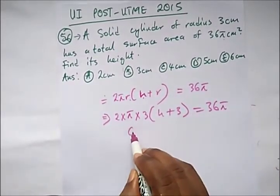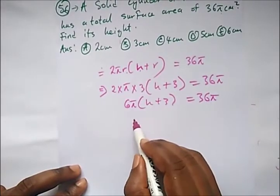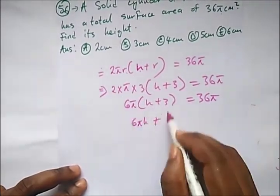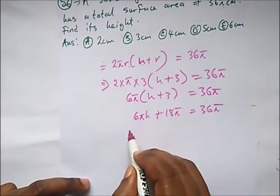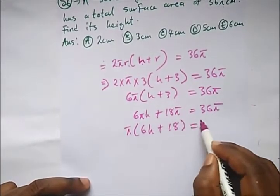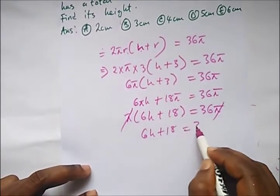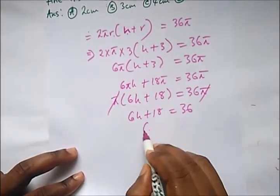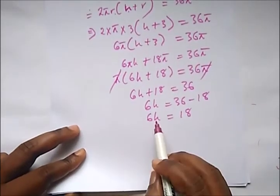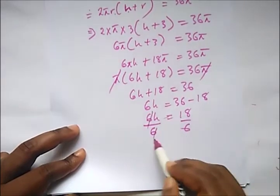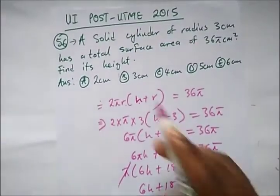Opening up the bracket: 6πH + 18π = 36π. Let's cancel π by factoring it out: π(6H + 18) = 36π, so 6H + 18 = 36. Taking 18 to the other side: 6H = 36 − 18 = 18. Dividing both sides by 6: H = 3 cm. Our right answer here is option B.